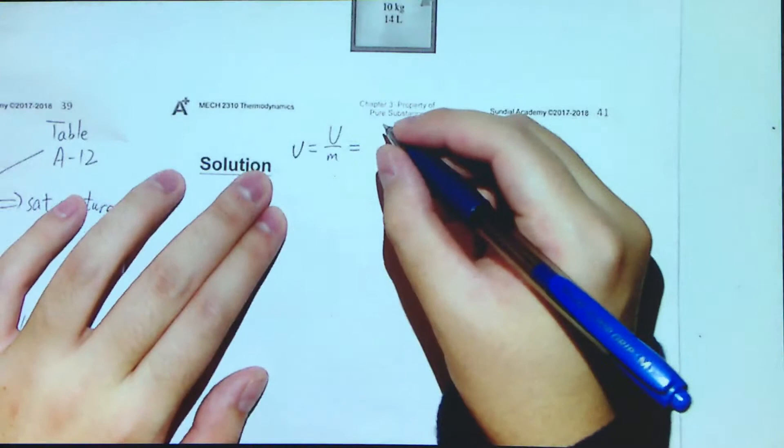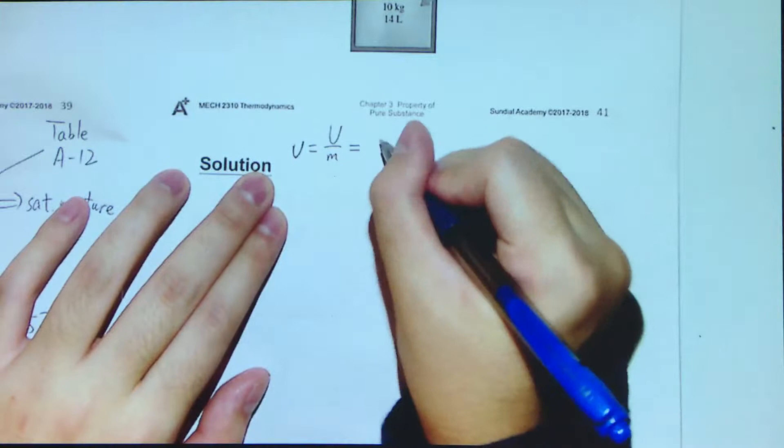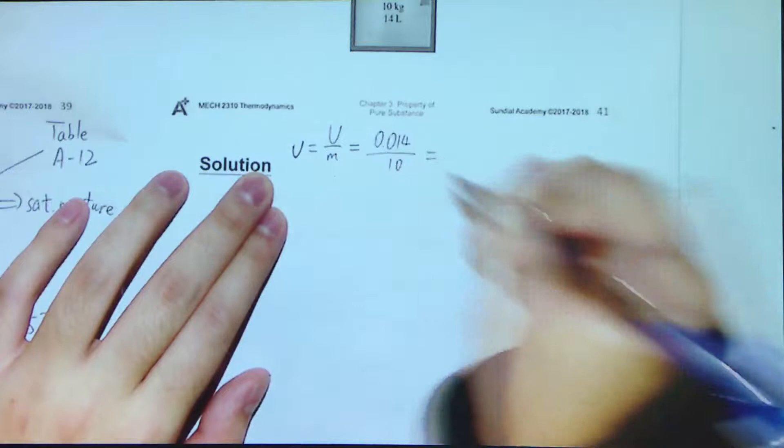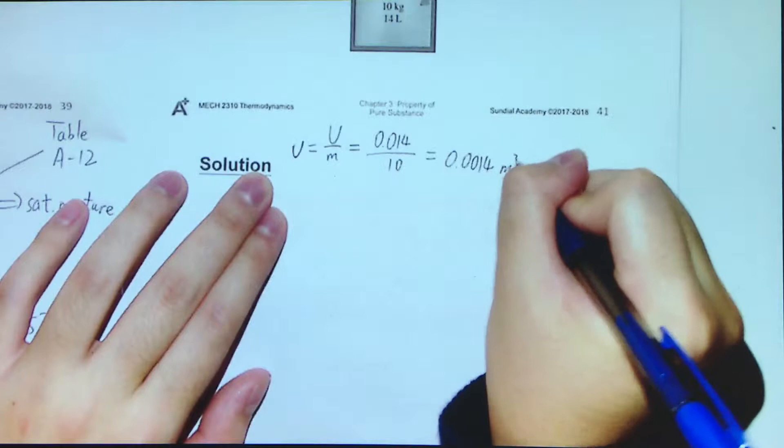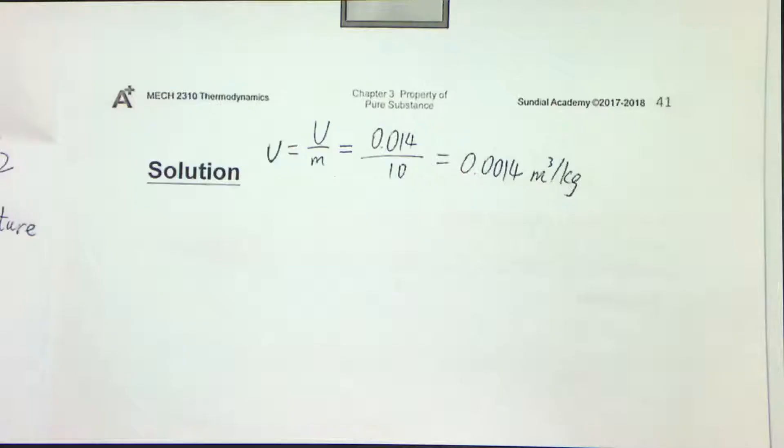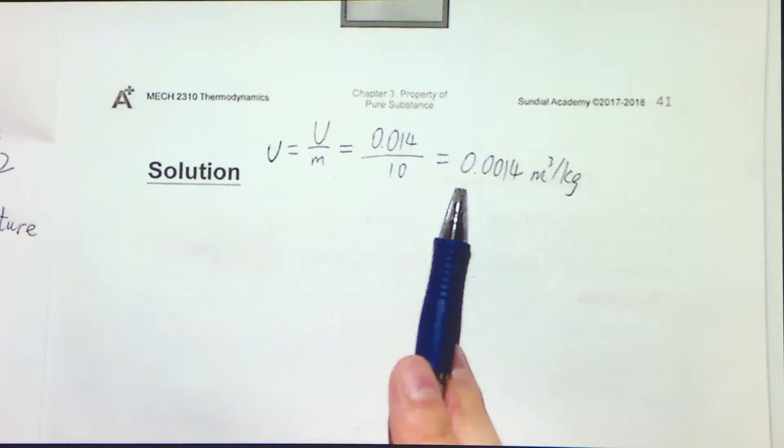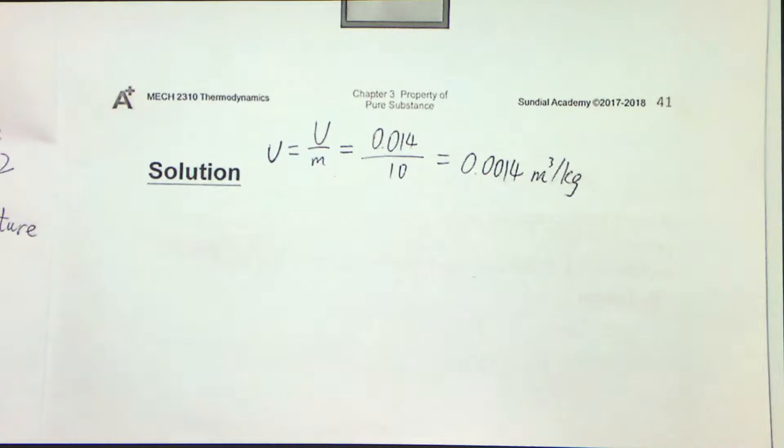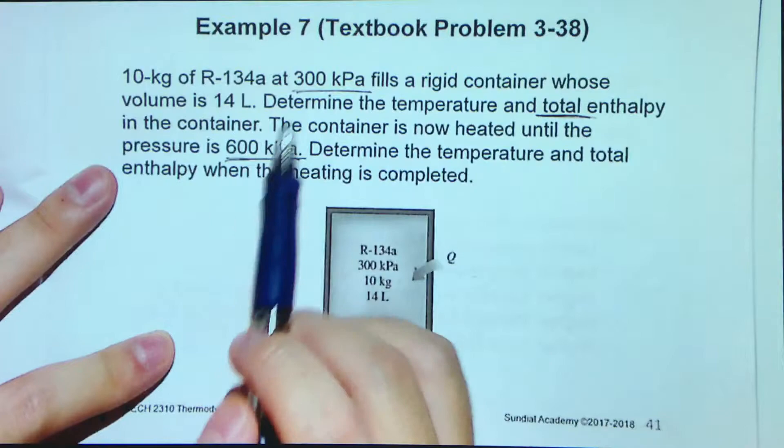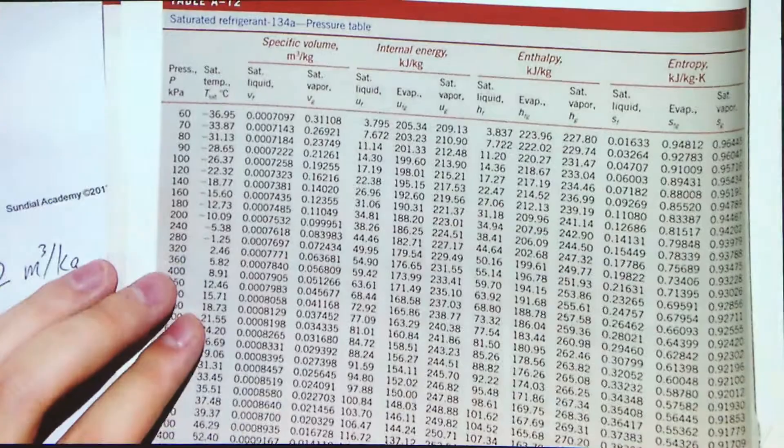So v is equal to big letter V divided by the mass. As I mentioned, 14 liter is equal to 14 divided by 1000 meter cube, so 0.014 divided by 10, we get 0.0014 m³ per kg. So we have this value, but whether it's saturated or not, let's go to what table? We have these two known pressures. First of all, 300 kilopascal. So we need to go to table A-12.